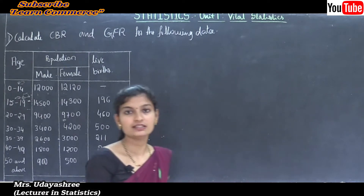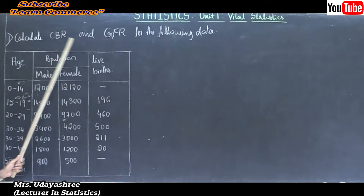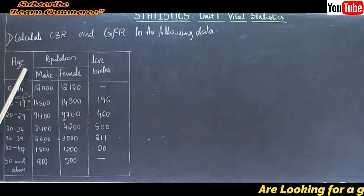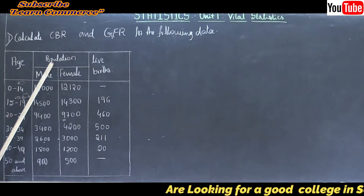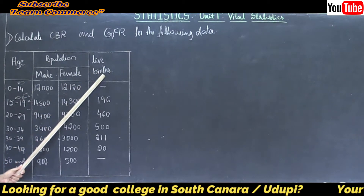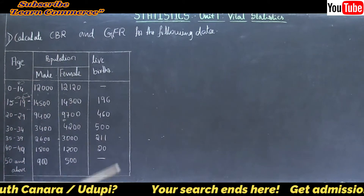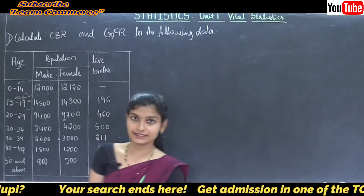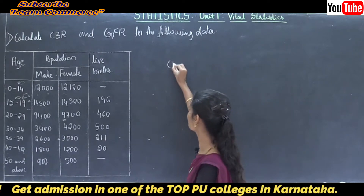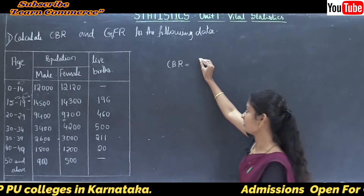The first problem is: calculate CBR and GFR for the following data. The given information are age, population under that male and female, and next that is live births. Now first we need to calculate CBR. CBR in the sense crude birth rate. The crude birth rate formula is: CBR is equal to number of live births.